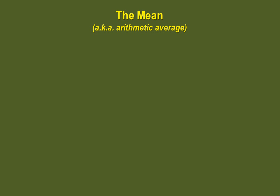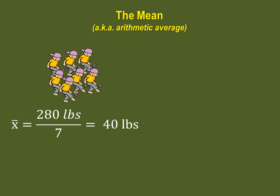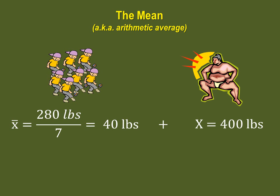Imagine that you have a group of seven small children weighing all together 280 pounds, so on average each child weighs approximately 40 pounds. If a 400-pound sumo wrestler were to join the group, the average weight would be 280 plus 400 pounds divided by 8, which gives us a mean of 85 pounds. Notice how much larger the average is, even though we added only one value. Because 400 is so much larger than 40, it has greatly influenced our mean.